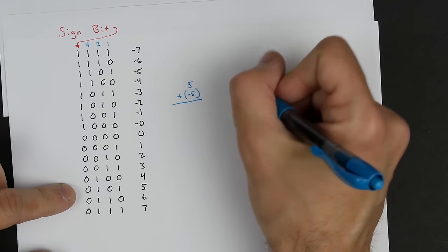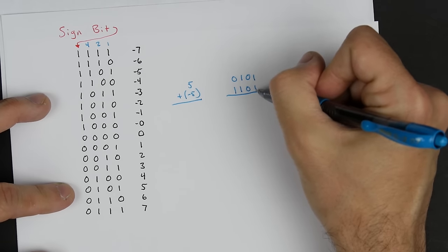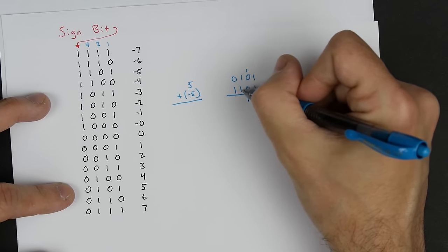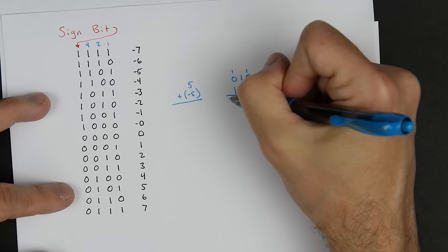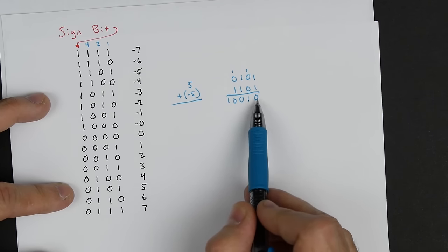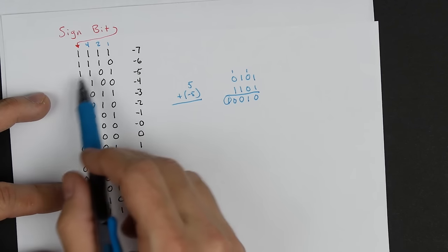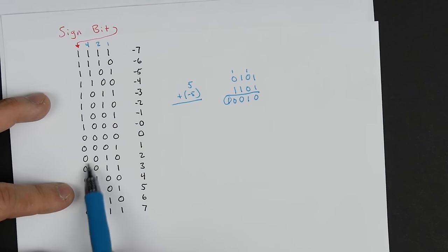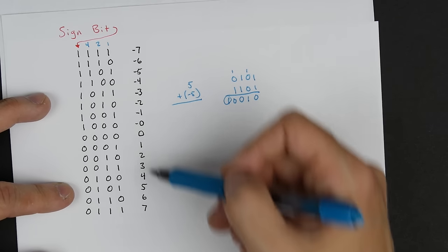If we look at 5 — 0, 1, 0, 1 — and negative 5 — 1, 1, 0, 1 — and add these together: 1 plus 1 is 2, so put a 0 and carry the 1; 1 plus 0 plus 0 is 1; 1 plus 1 is 2, put 0 and carry the 1; 1 plus 1 is 2, so 0 and carry the 1. Ignoring the carry bit when working with 4 bits, we get 0, 0, 1, 0, which is 2. So 5 plus negative 5 equals 2 — that's not right. Addition doesn't work with the sign bit approach.